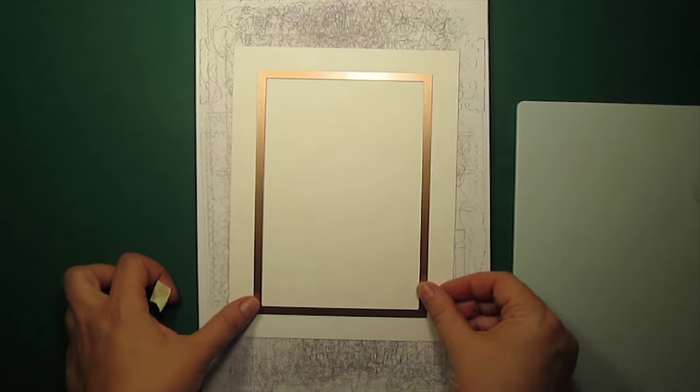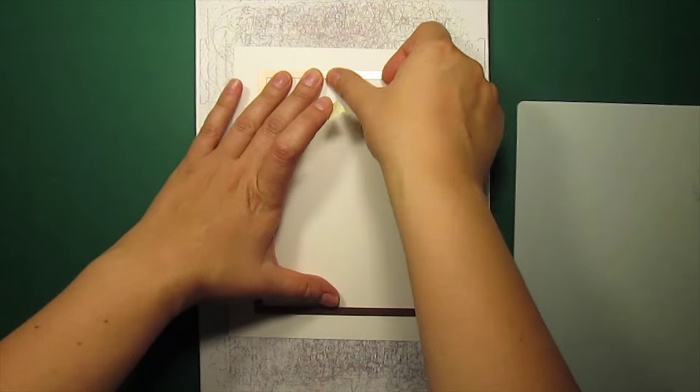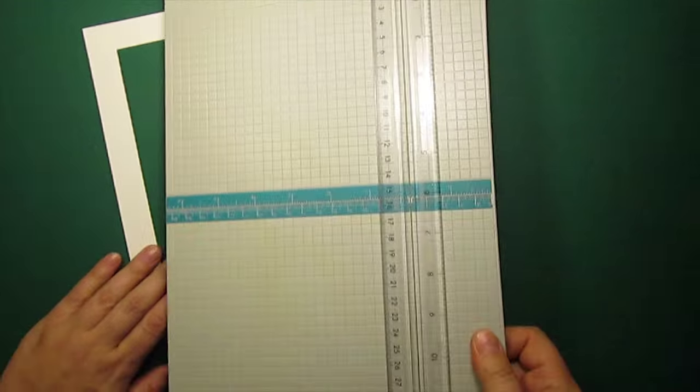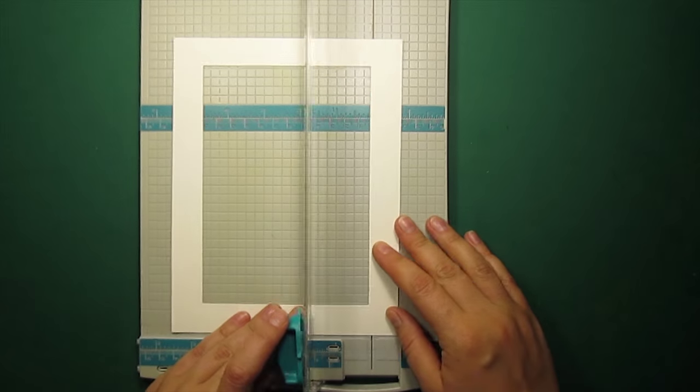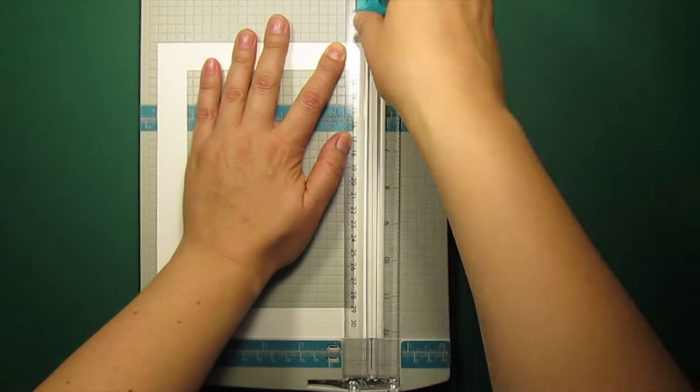I'm starting by making a frame for the card using the largest rectangle from 5x7 Matching Basics bead die set by Spellbinder. Now I'm going to trim the frame to half an inch thickness.